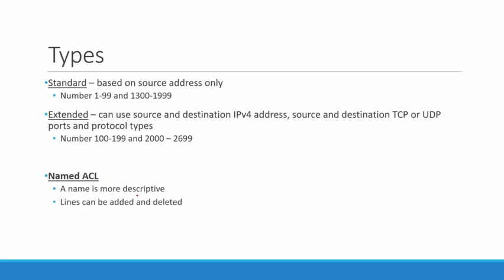We have multiple different types of access control lists. We're going to look at just standard and extended — we could look at time-based and dynamic, but here we'll just look at standard and extended ACLs. We can filter traffic based on source only when we configure a standard access control list. The number range for standard ACLs is 1 to 99 or 1300 to 1999. Extended ACLs give us a little more granularity and more control over what we're doing.